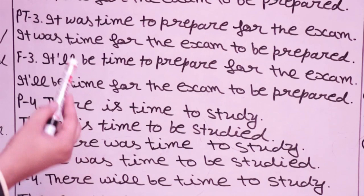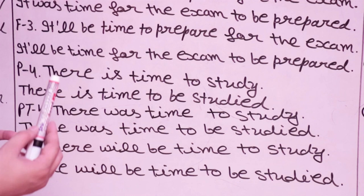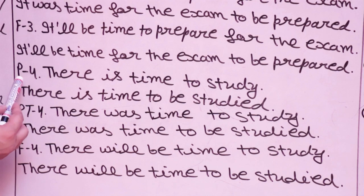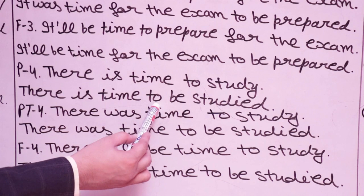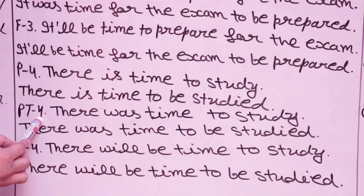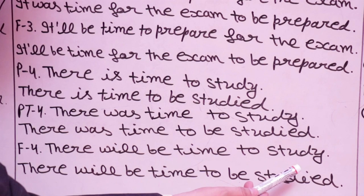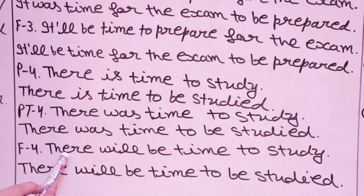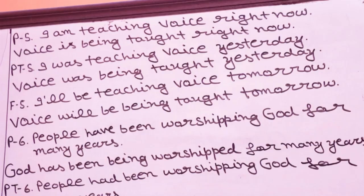P4 uses 'there is' — for example 'There is a class,' 'There is a holiday,' 'There is a call for you.' P4 example: 'There is time to study' becomes 'There is time to be studied.' PT4: 'There was time to study' becomes 'There was time to be studied.' F4: 'There will be time to study' becomes 'There will be time to be studied.' We simply add 'be' after 'to' and use the third form.